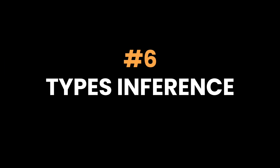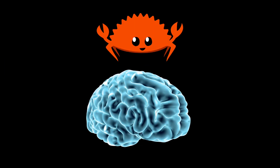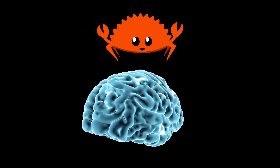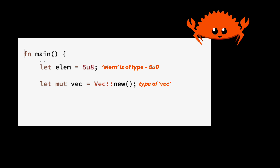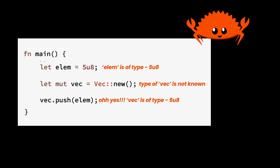Six: type inference. Rust's compiler is extremely smart with types. While it's a statically typed language, you don't have to explicitly annotate types all the time. Rust's type inference is intuitive and precise, which leads to clean and readable code without sacrificing performance or safety.